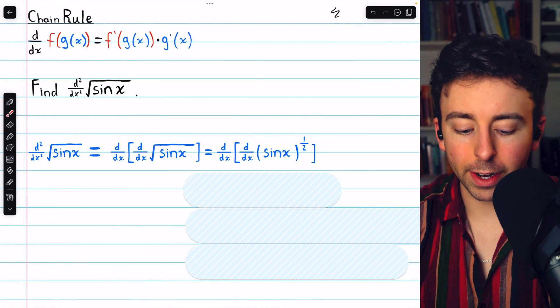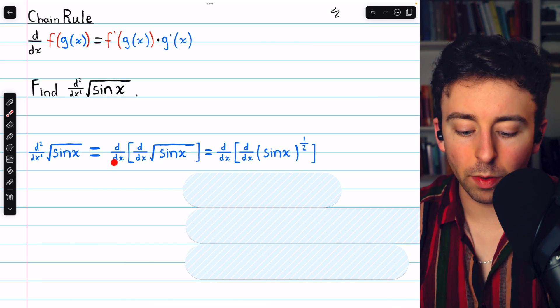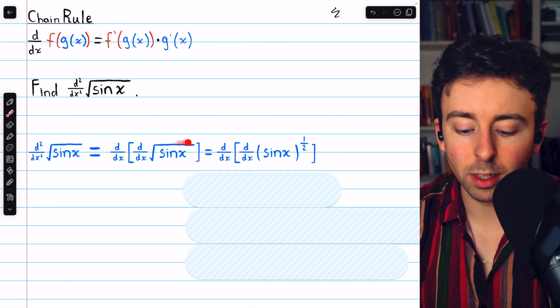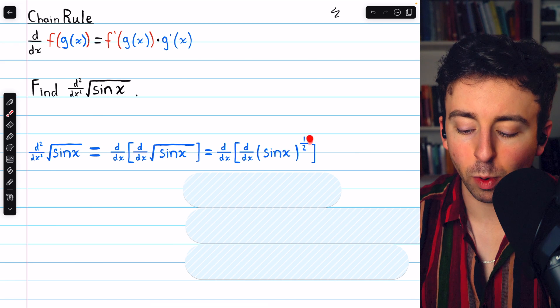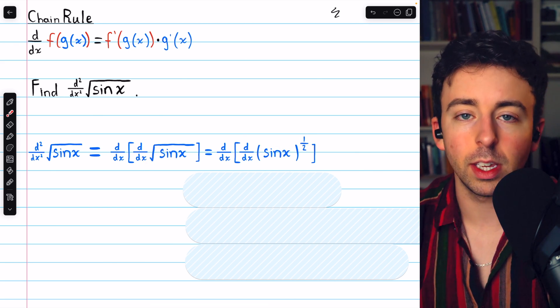We'll begin with some simple rewriting. The second derivative of the square root of sine x is just the derivative of the derivative of the square root of sine x. Then it will be easiest to rewrite that square root as a rational power. The square root of sine x is the same as sine x to the one-half.